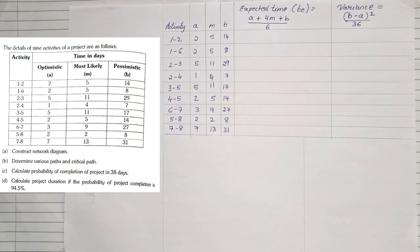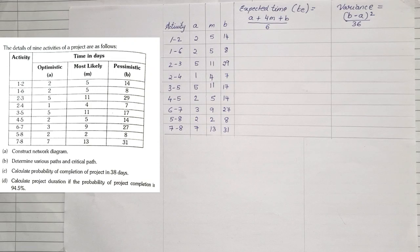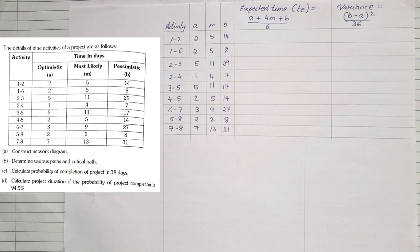There is a question in front of us. The details of nine activities of a project are given — optimistic time (a), most likely time (m), and pessimistic time (b). They ask us to: (A) construct a network diagram, (B) determine the various paths and critical path, (C) calculate the probability of completion in 38 days, and (D) calculate project duration if probability of completion is 94.5%.